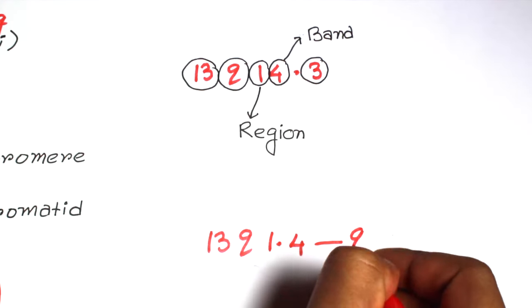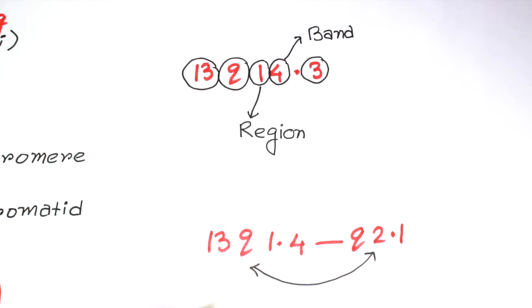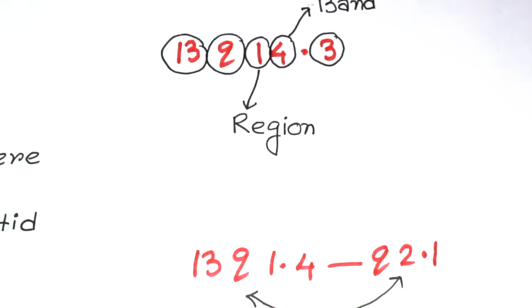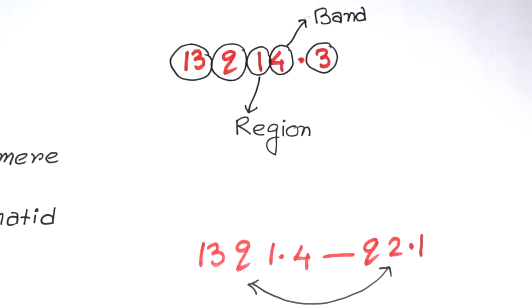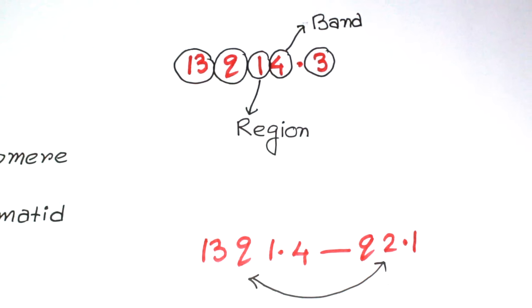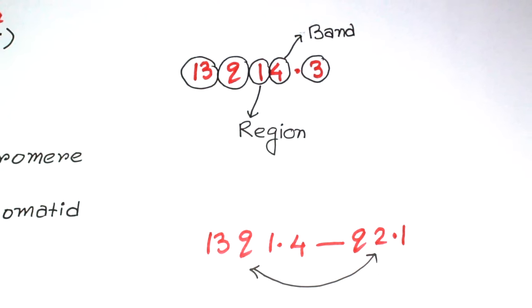Now another example. Suppose it is written like this. There's not two separate chromosomes; it only means that the gene is present on the long arm of chromosome number 13, somewhere in the range from sub-band 4 of region 1 to sub-band 1 of region 2.